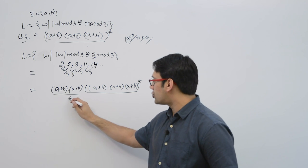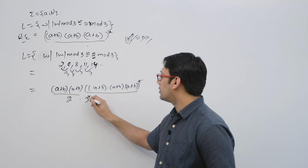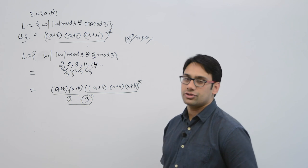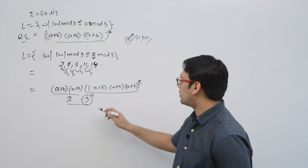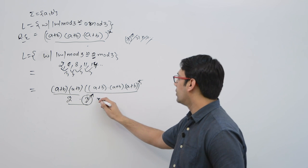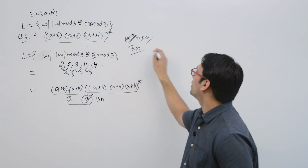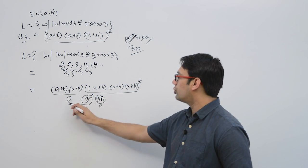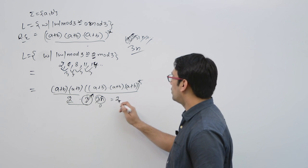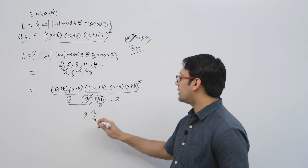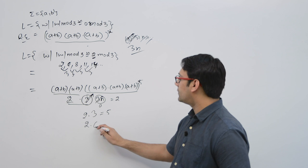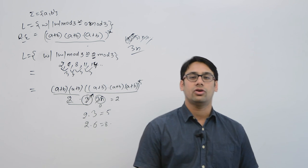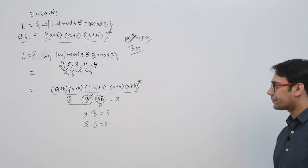So a length-2 string is concatenated with strings of length 3n. If the star is 0, we get a string of length 2; if the star is 1, length 5; if the star is 2, length 8; and so on. This regular expression represents the language where every string, when divided by 3, gives a remainder of 2.